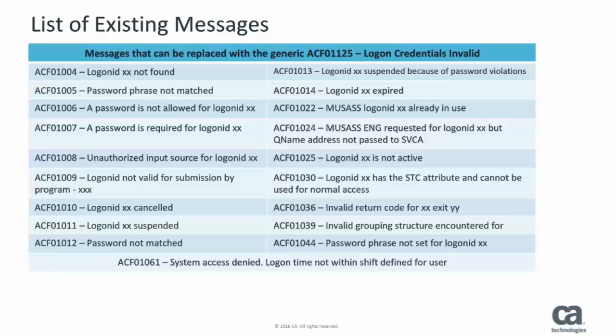The table shown here displays sign-on messages that can inadvertently identify valid logon IDs. The GSO MSG Ops record replaces detailed sign-on messages with a generic message that simply says, logon credentials invalid. When inserting the MSG Ops record, you must identify the message that you want to replace. Messages ACF 01004, 1005, and 1012 are added by default and do not need to be specified when inserting the record.